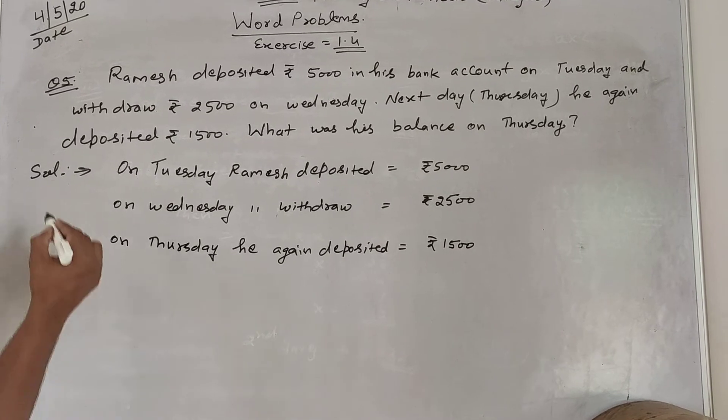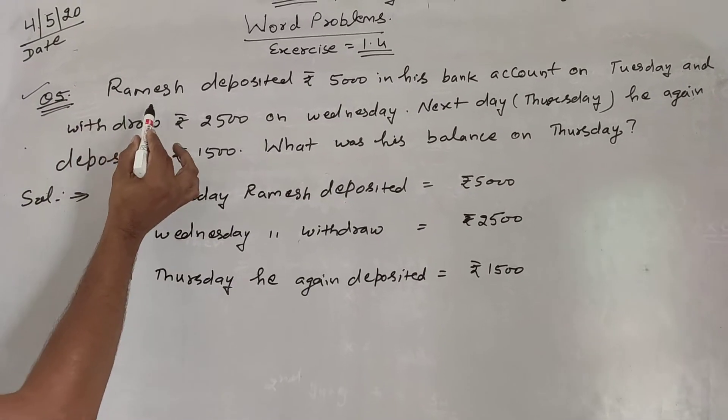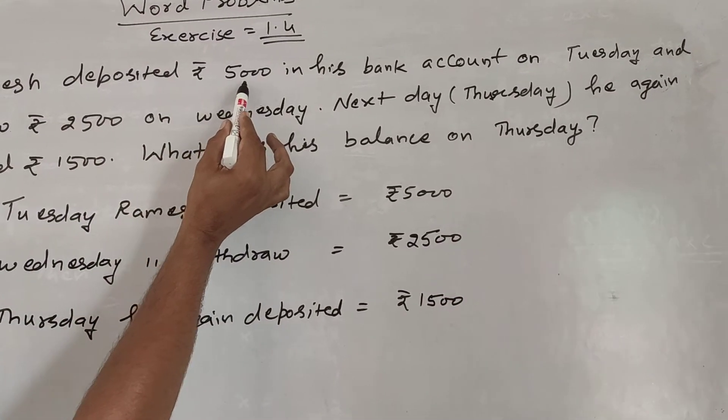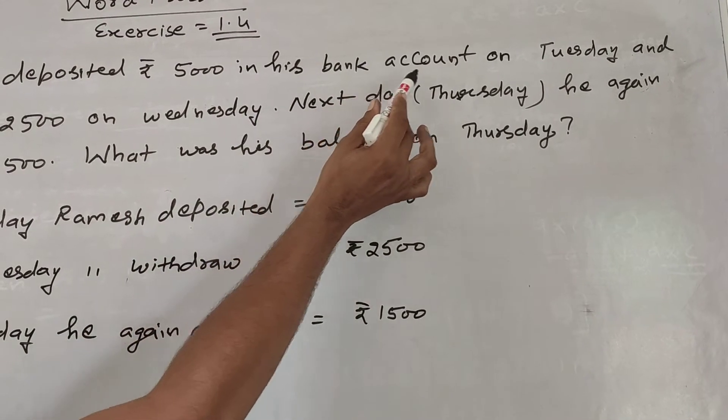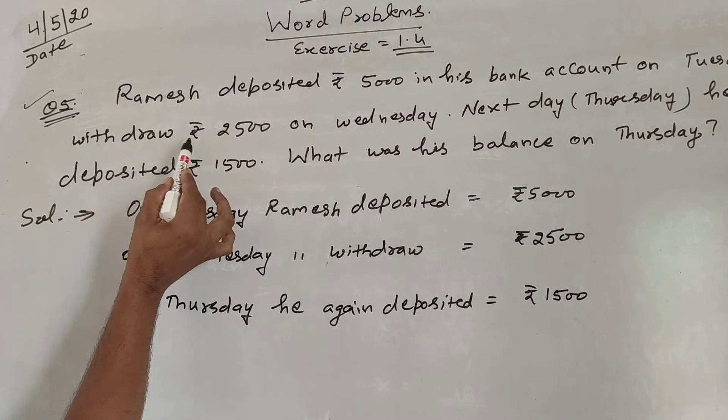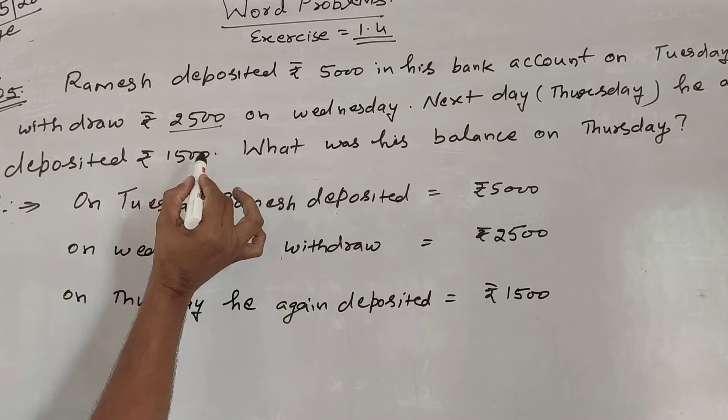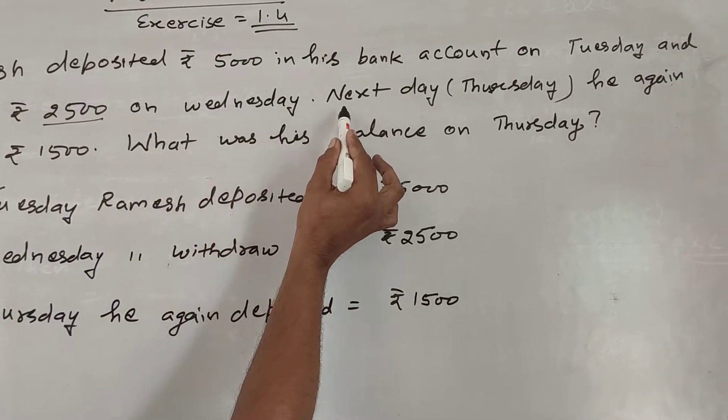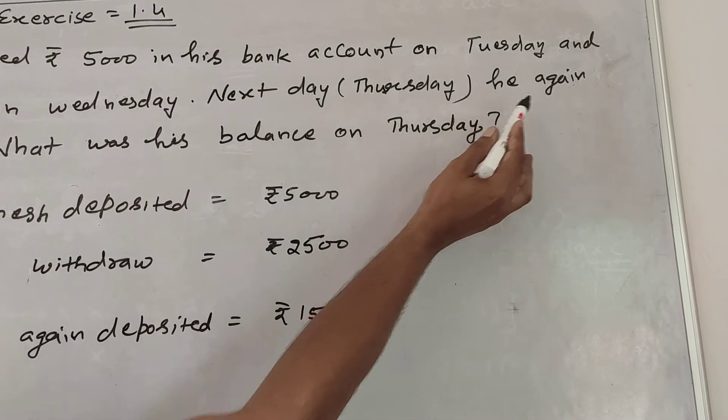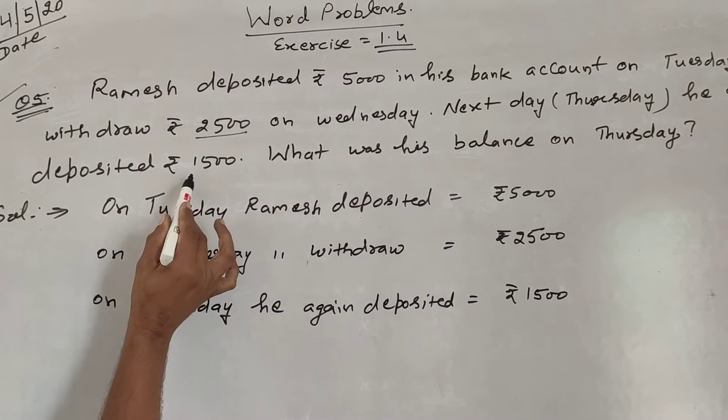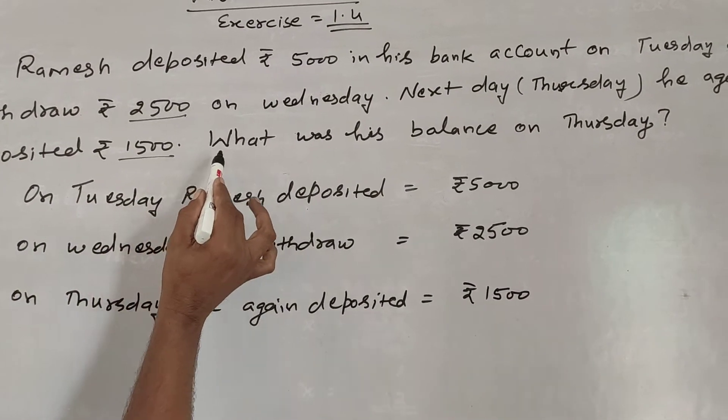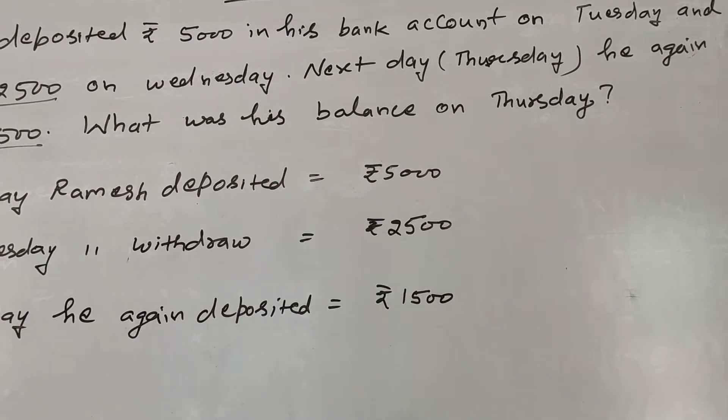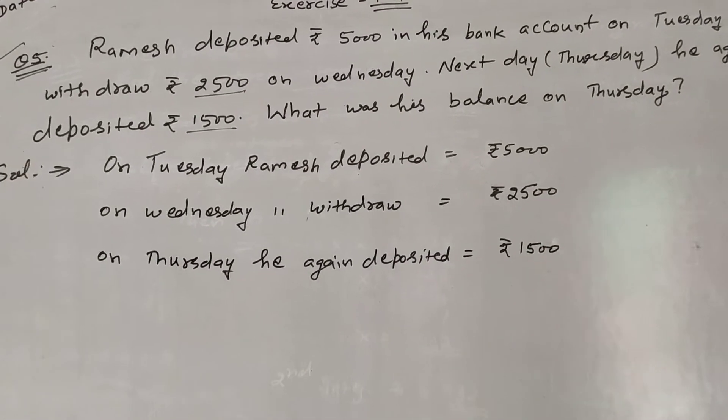Now, see question number 5. Ramesh deposited Rs. 5,000 in his bank account on Tuesday and withdrew Rs. 2,500 on Wednesday. Next day, Thursday, he again deposited Rs. 1,500. So, what was his balance on Thursday?